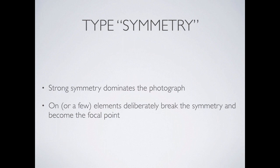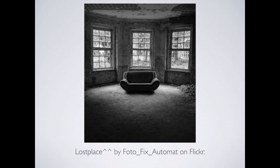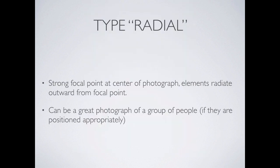Symmetry is another technique — a strong symmetry dominates the photograph. The key is that there's something out of place, which makes the photo much more dramatic. The Brooklyn Bridge in New York shot perfectly symmetrically: the bridge and cables are symmetrical, but all the people are on the right side, not the left. You get this interesting photo because the non-symmetrical element draws your attention. Another example: a room where everything is symmetrical except for the pile of dust in the corner — that's what draws your eye.